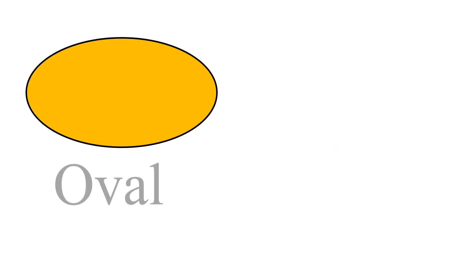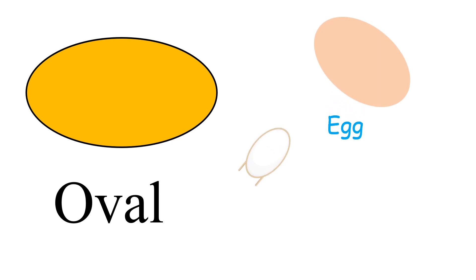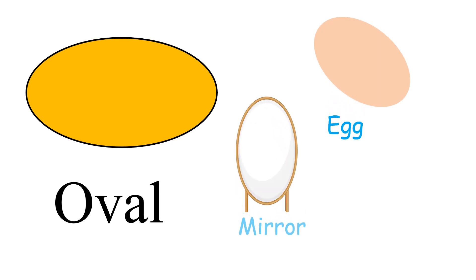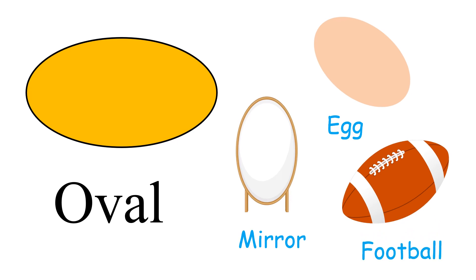Oval. Egg. Mirror. American football. These objects are oval in shape.